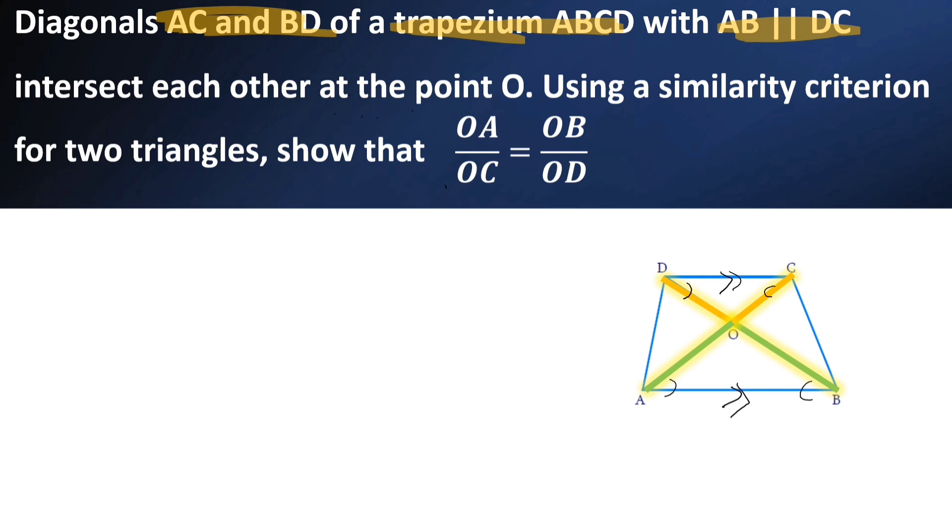Now let us write in triangle OAB and triangle OCD. Here, angle O is equal to angle O. Why? Vertically opposite angles. Angle AOB is equal to angle COD. Why? Vertically opposite angles.